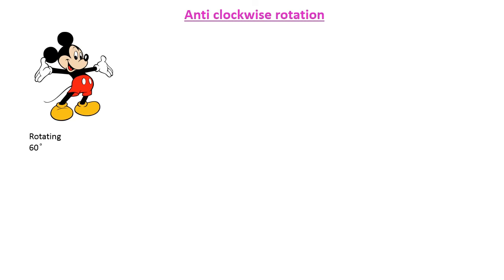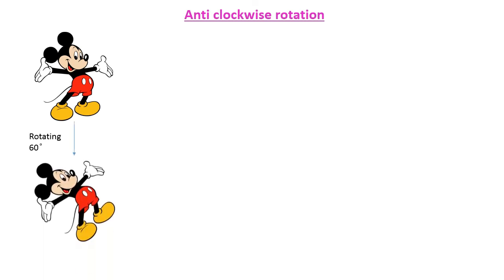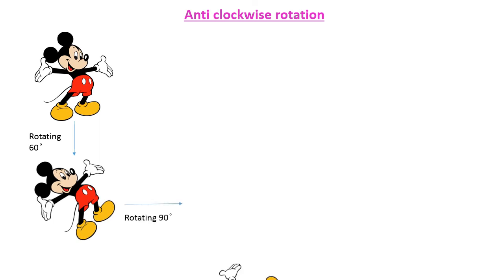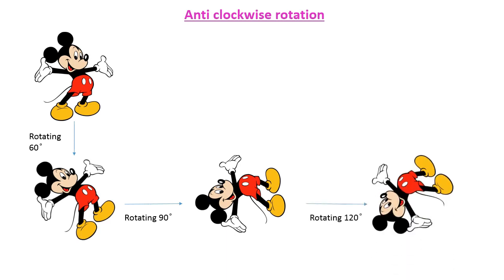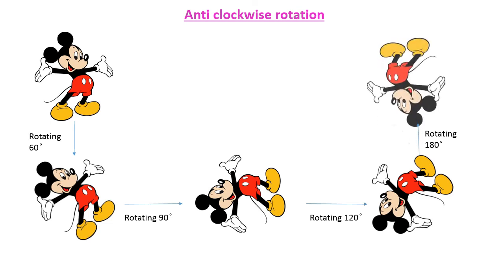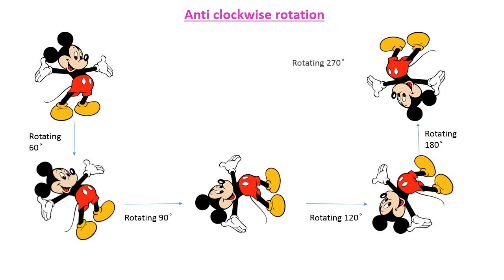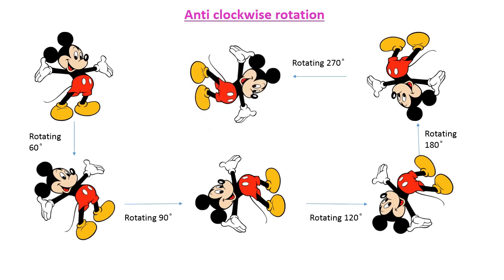Another example: anticlockwise rotation. Rotating the figure by 60 degrees gives this; by 90 degrees, it looks like this; by 120 degrees, it is rotated in this manner; by 180 degrees, it looks like this; by 270 degrees, it looks like this; and rotating by 360 degrees, the figure again attains its first position. From this cycle we can see the anticlockwise rotation — the figure is rotating from right to left.